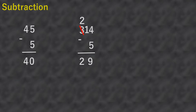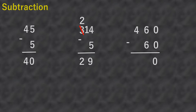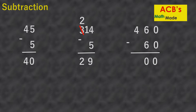Four hundred sixty minus sixty. Zero minus zero equals zero, six minus six equals zero, then bring down four. So four hundred sixty minus sixty equals four hundred.